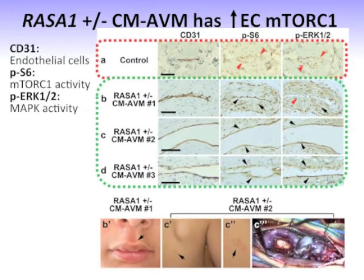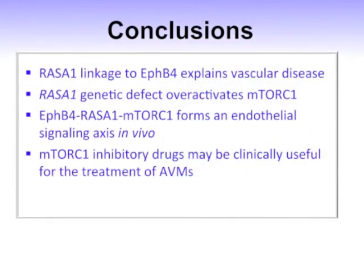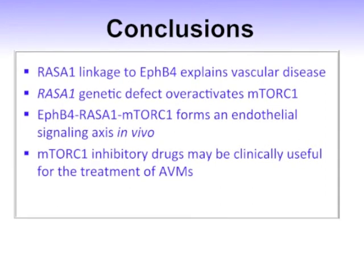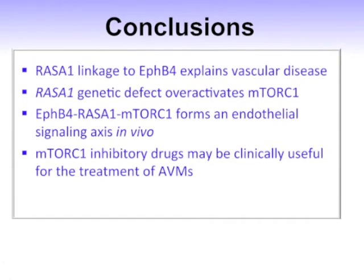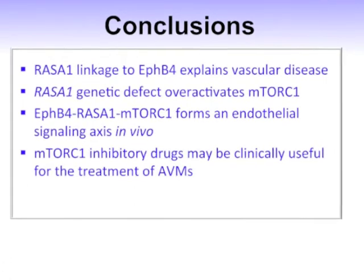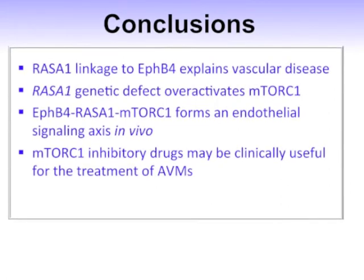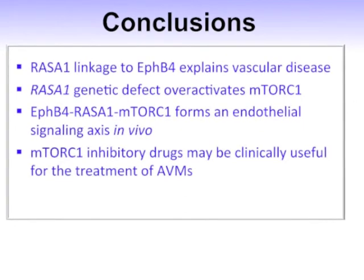Looking at panel A, there is very little staining for Phospho-S6 or Phospho-ERK. When you look at the three RASA1-positive patient samples that follow, each vessel is wider and the staining is stronger for both Phospho-S6 and Phospho-ERK. When we analyzed 11 samples, 11 out of 11 had increased mTORC1. This indicated that it might be possible to consider use of rapamycin — an approved drug — or other rapalogs currently seeking approval, for use in children or patients who have had surgery, to promote normal vessel formation instead of arteriovenous malformations.